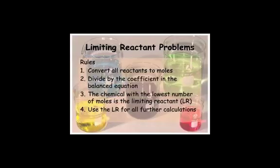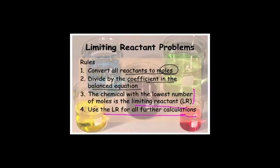Now we want to move to limiting reactant problems. This is a different — actually advanced — method than we taught last year. Last year we taught you to convert both reactants to a particular product and the smallest one won. You can still do that if you want, but we're going to show you a way that saves a few steps. You're going to divide each number of moles by the coefficient in the balanced equation. The chemical with the lowest number of moles is the limiting reactant. Then you'll use the limiting reactant for all further calculations.